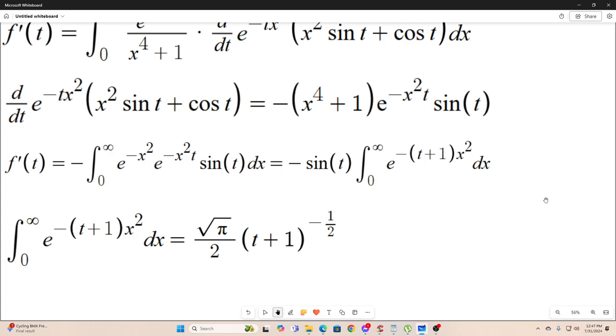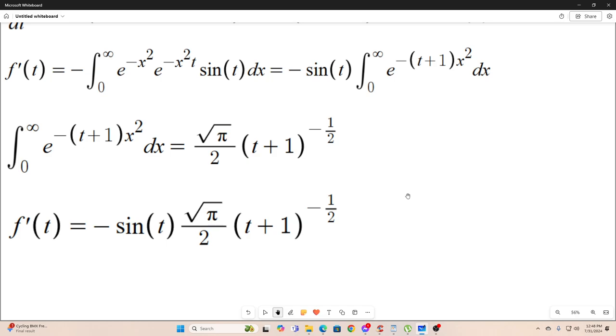So next, we noticed that this integral right here is a variation on the Gaussian integral. And it evaluates to this. All you would do is make the substitution that t plus one times x squared equals u squared, and you would end up with this. And so, provided you're familiar with the Gaussian integral, which I'm kind of assuming people watching this video are. All right, so that gives us that f prime of t is equal to this. All I did is replace this. I replaced this with what we found it to be.